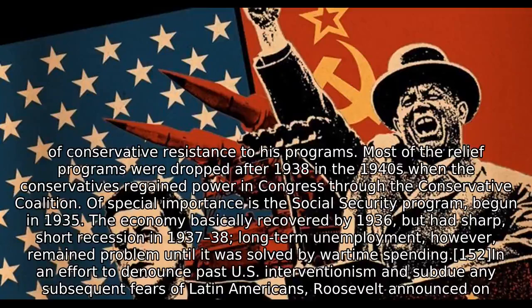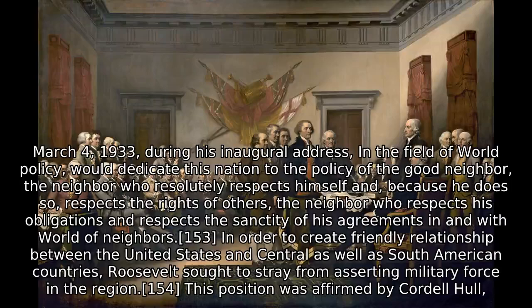In an effort to denounce past U.S. interventionism and subdue fears of Latin Americans, Roosevelt announced on March 4, 1933, during his inaugural address, that he would dedicate this nation to the policy of the good neighbor — the neighbor who resolutely respects himself and, because he does so, respects the rights of others; the neighbor who respects his obligations and respects the sanctity of his agreements in and with a world of neighbors.